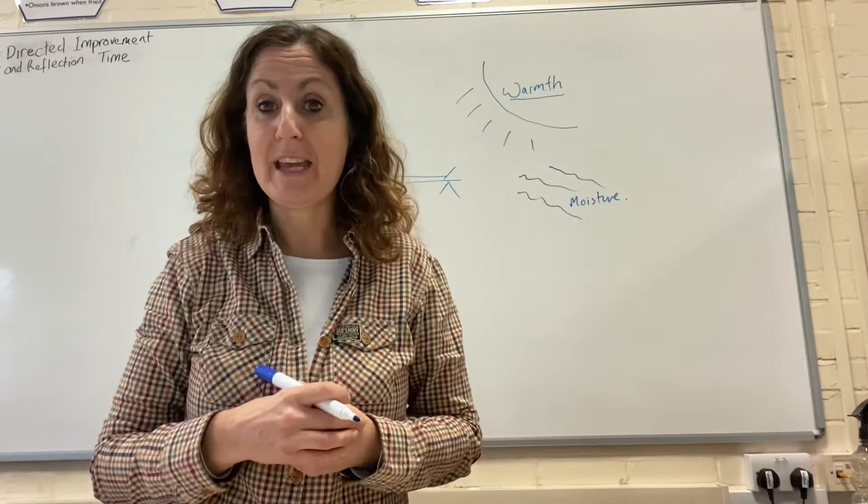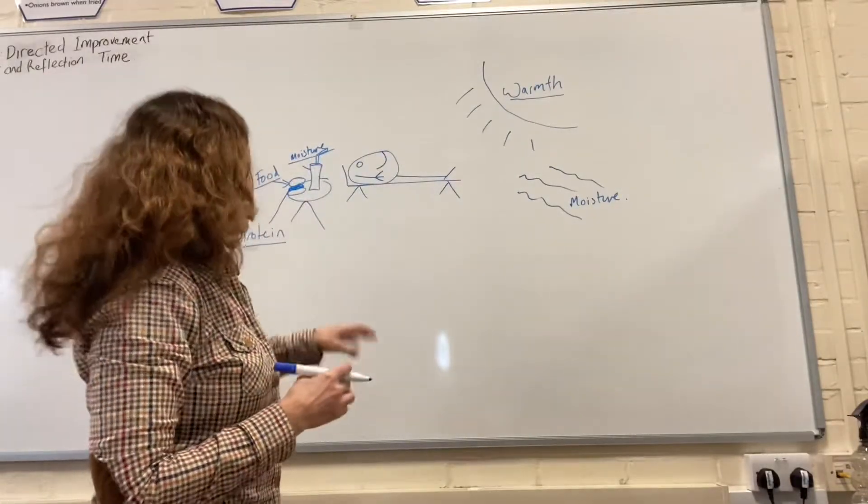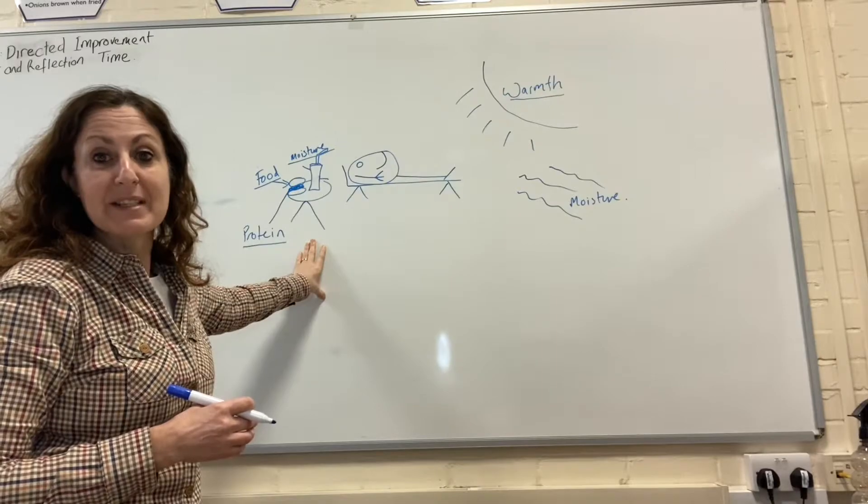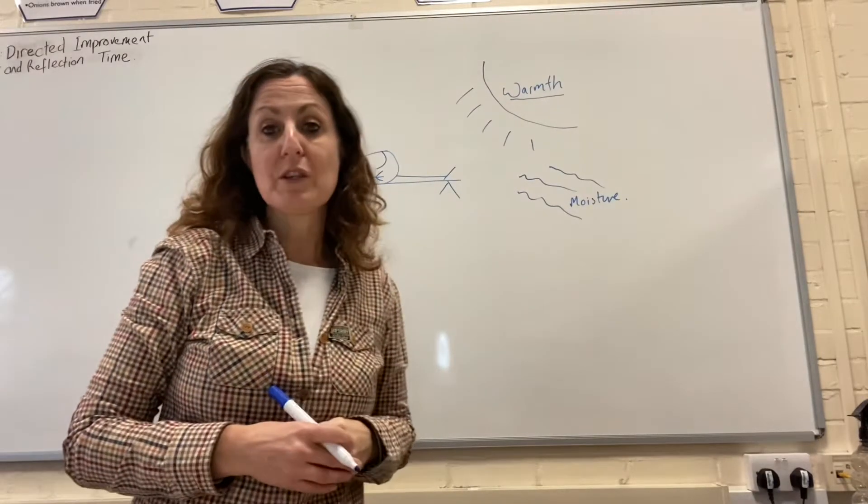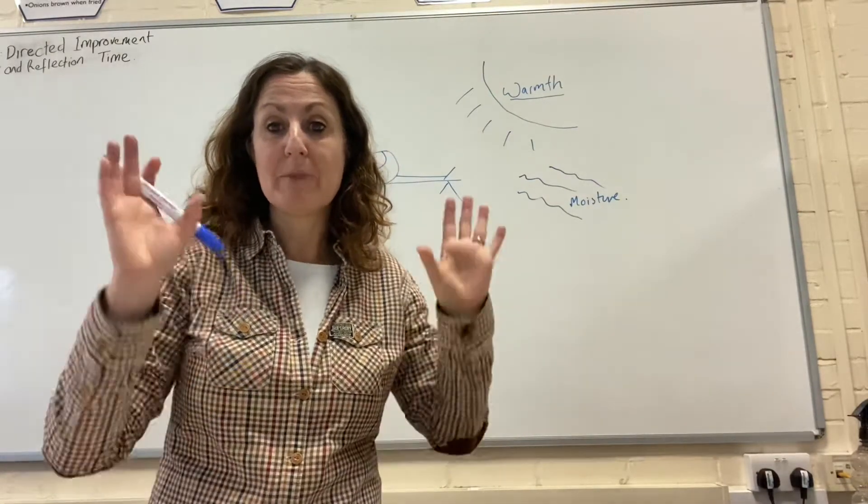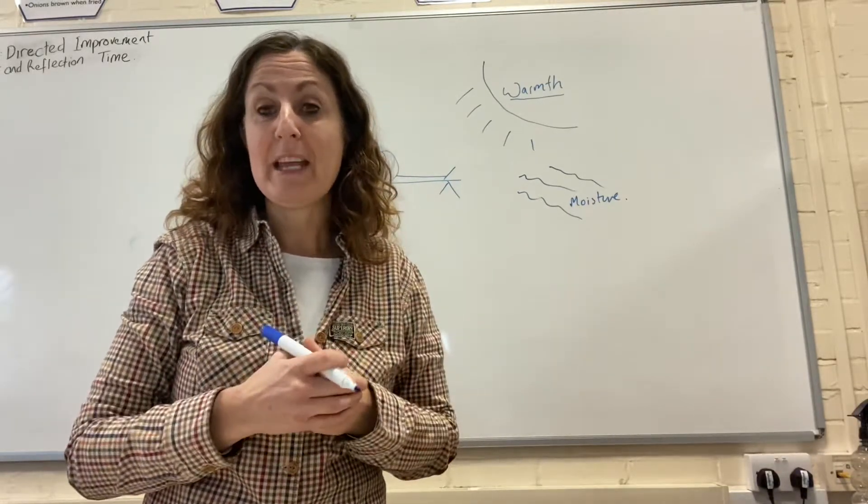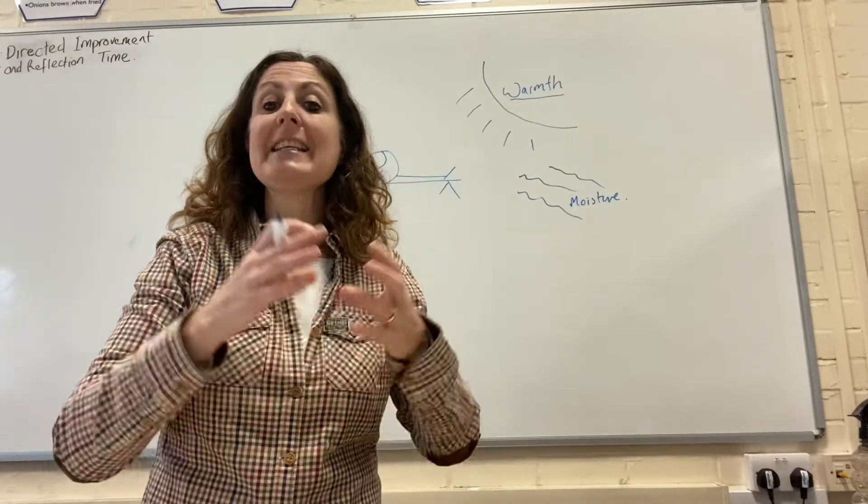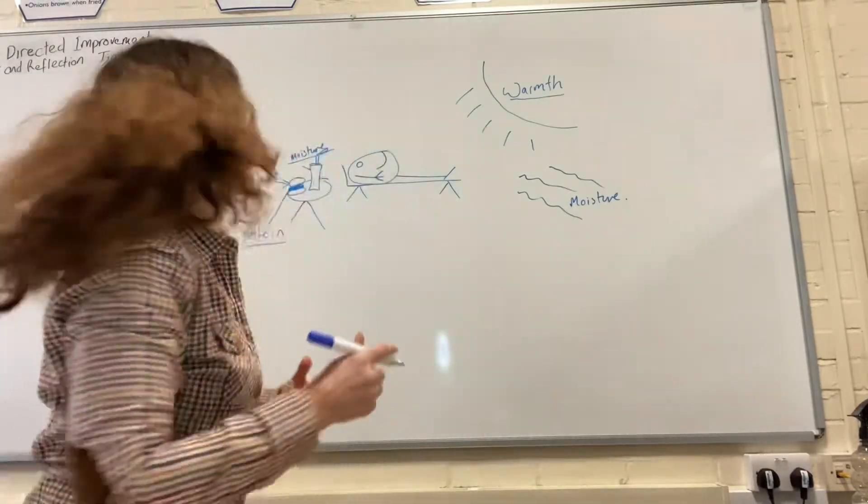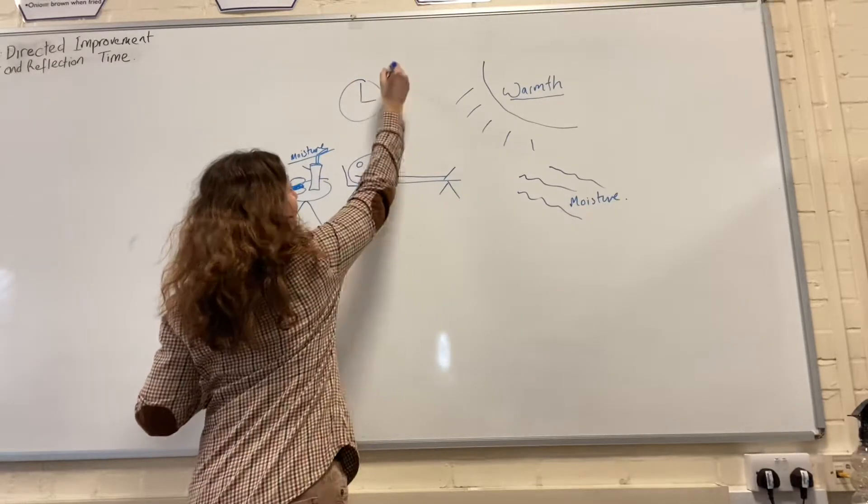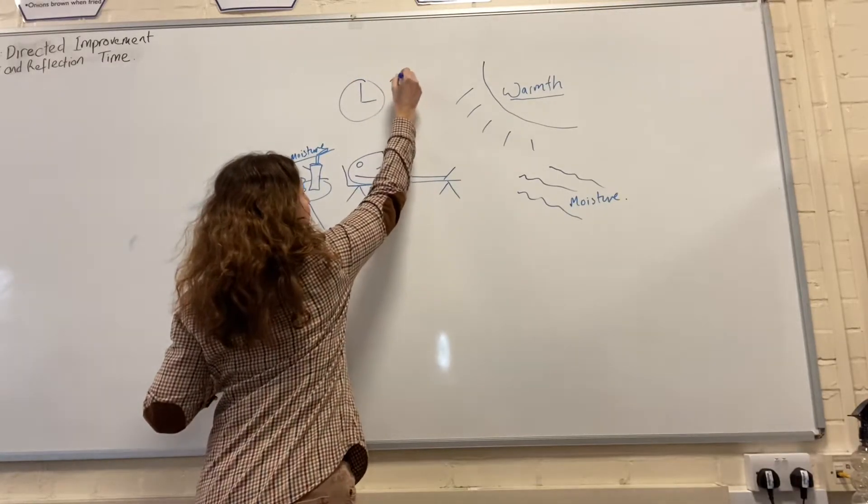There's one other thing Bobby likes when he goes to the beach. Imagine if you got to the beach and your parents said 'we're packing up, we're going home' - you'd be really upset. The same with Bobby when he's growing - he needs time to grow. So the other condition of growth that Bobby requires is time.